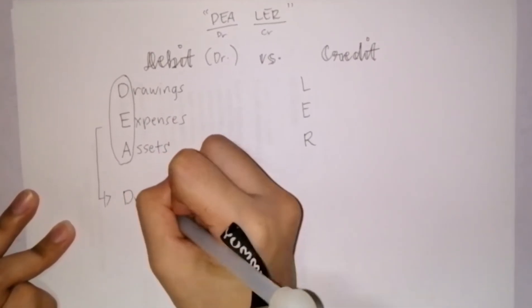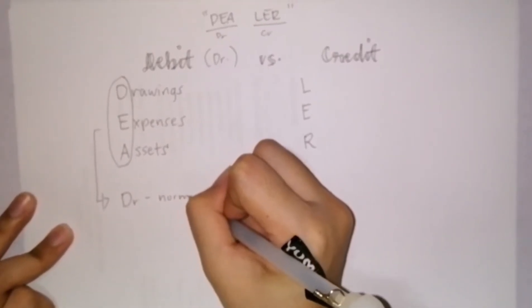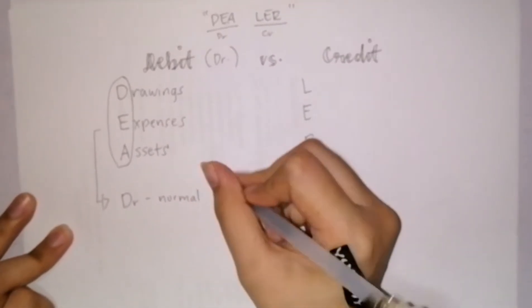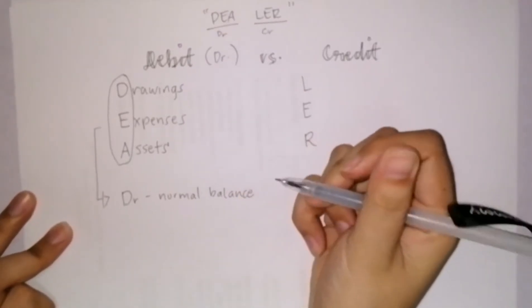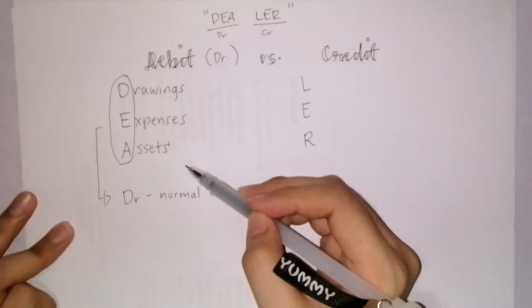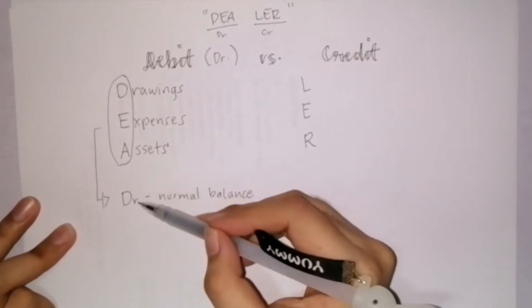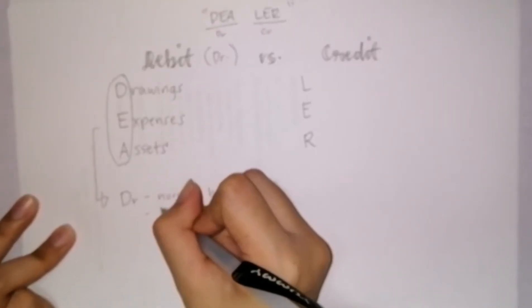When we say normal balance, when these three accounts increase, you will record a debit. On the other hand, when they decrease, you record a credit.